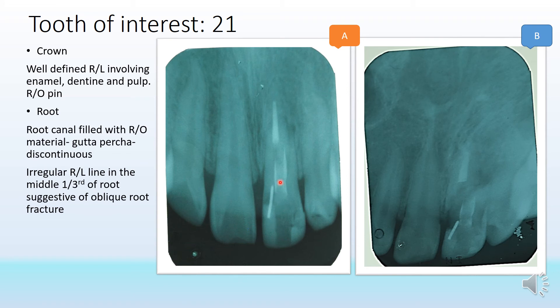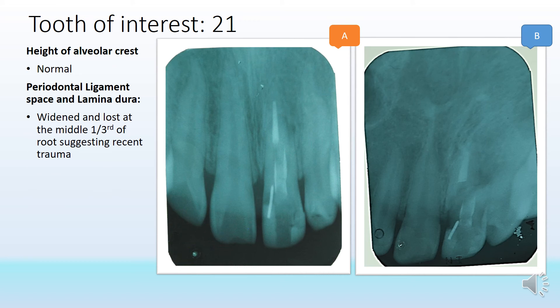In the root, it appears to be a root canal filled tooth with radio-opaque gutta-percha, but the gutta-percha appears discontinuous. Around the middle third of the root, an irregular line is visible suggestive of an oblique root fracture. There is discontinuity of the gutta-percha in that area. This can be easily confused by students viewing it for the first time, and a fracture would not be suspected without the second image confirming the fracture line.